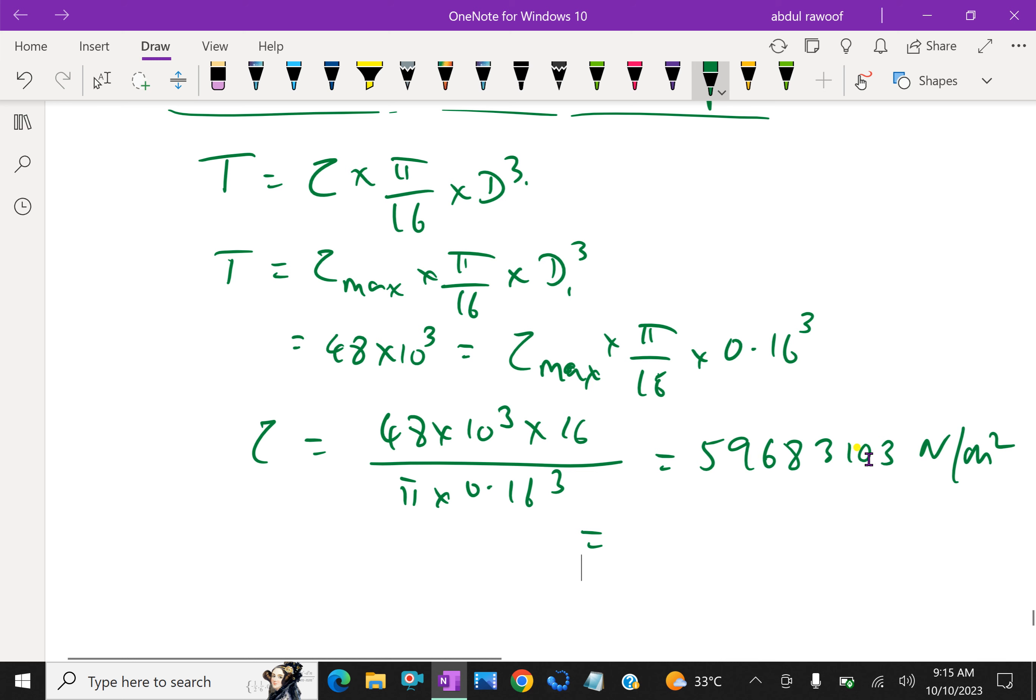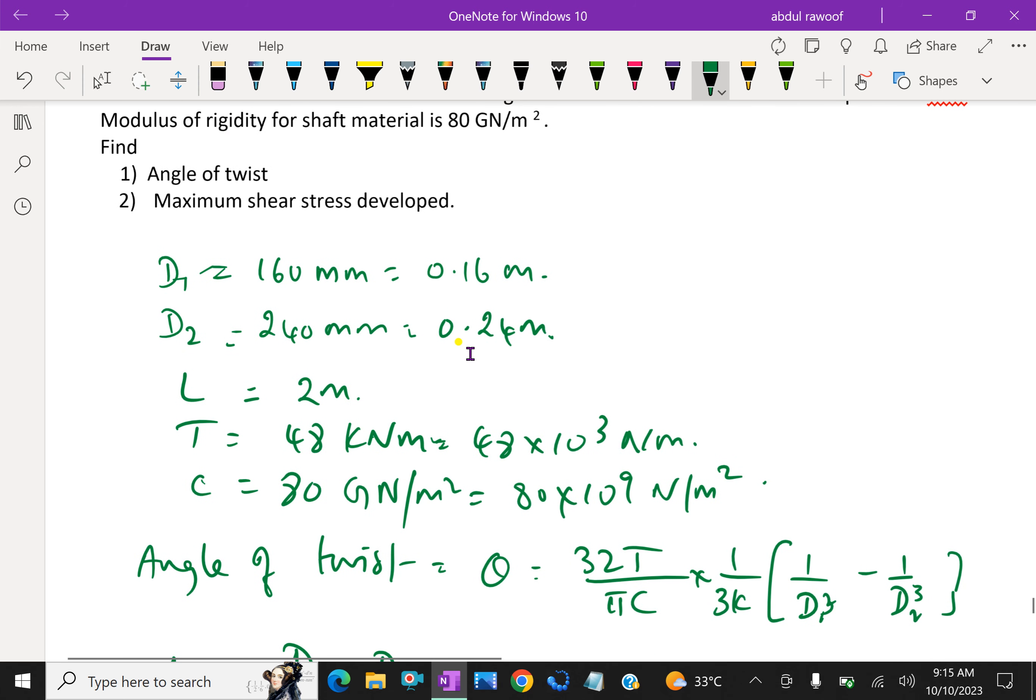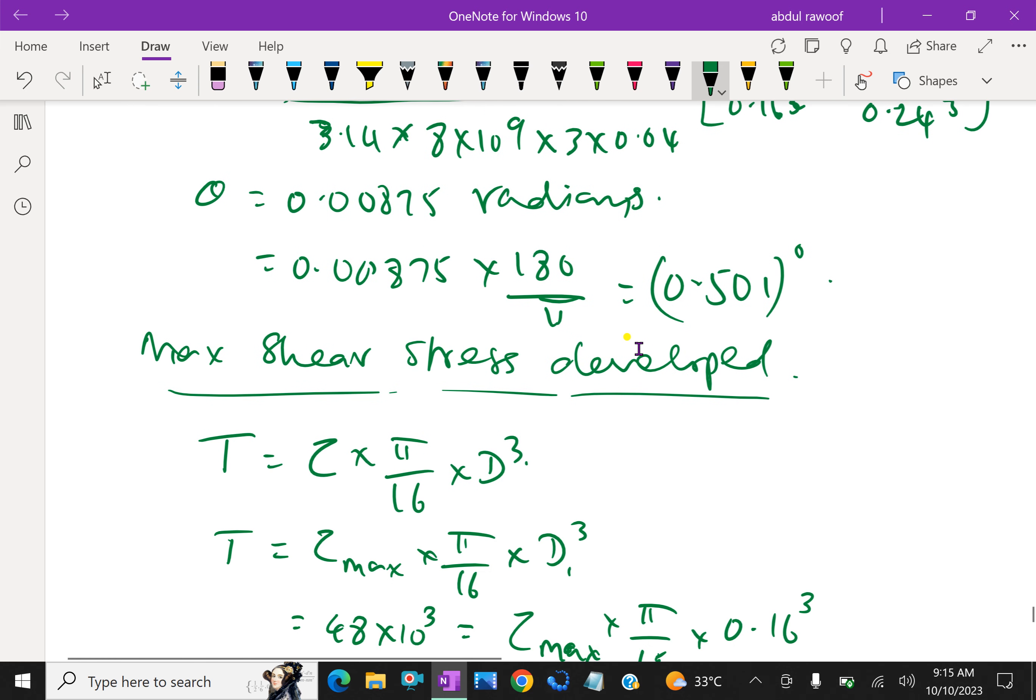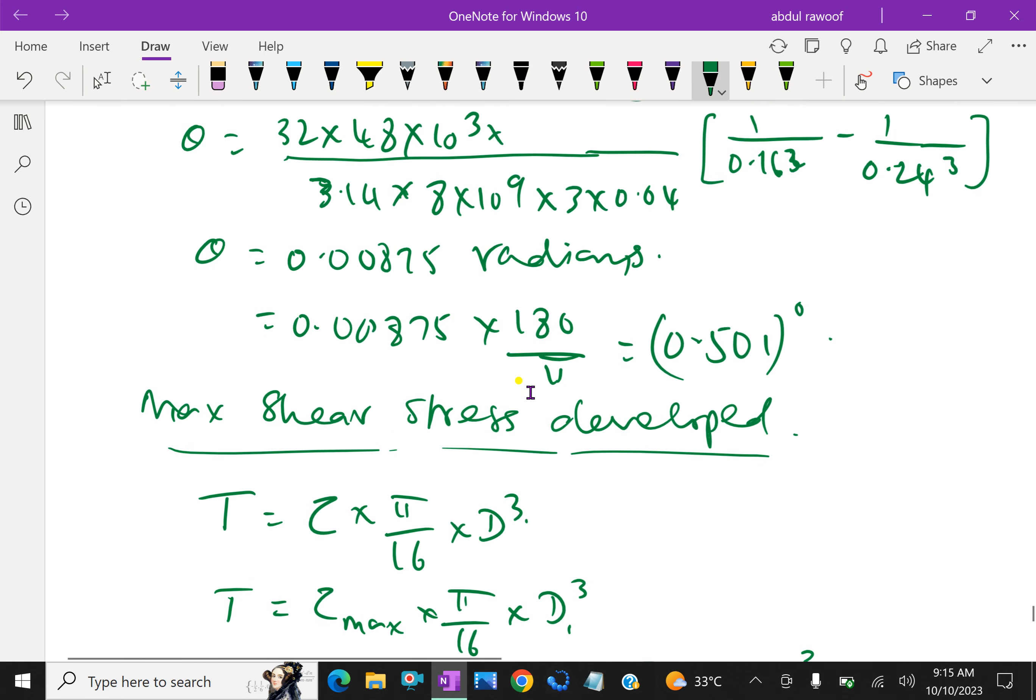Which is equal to 59.68 times 10⁶ Newton per meter square, which is equal to 59.68 mega Pascal. So we calculated the maximum shear stress developed is 59.68 MN/m².